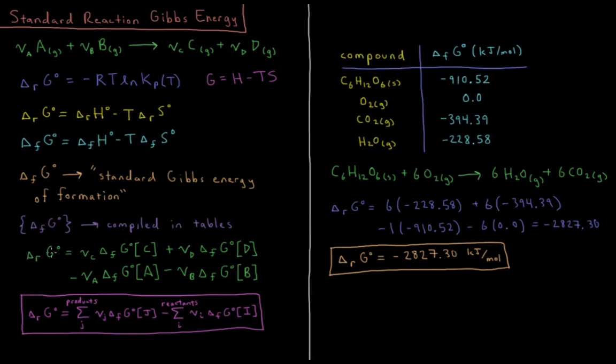So the Gibbs energy change of the reaction, as you might guess based on our previous discussions, is going to be equal to the stoichiometric coefficients for our products times their standard Gibbs energy of formation, summed over all the products, minus the same thing for the reactants, their stoichiometric coefficient times the standard Gibbs energy of formation for each reactant.